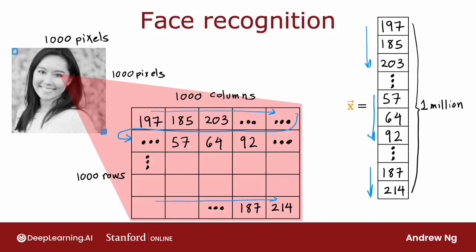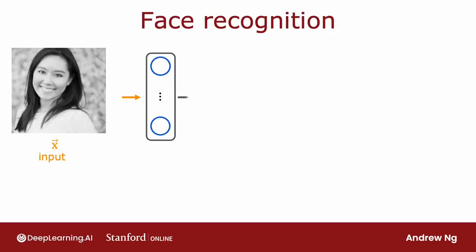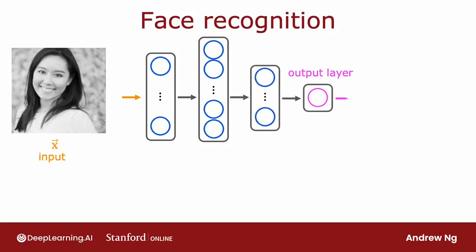So this is how you might build a neural network to carry out this task. The input image X is fed to this layer of neurons — this is the first hidden layer, which then extracts some features. The output of this first hidden layer is fed to a second hidden layer, and that output is fed to a third hidden layer, and then finally to the output layer, which then estimates the probability of this being a particular person.